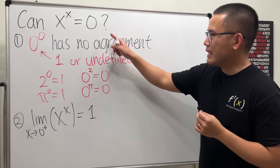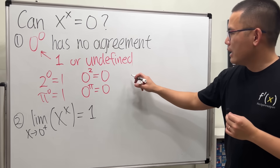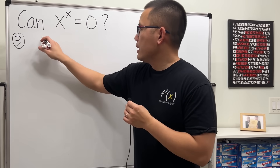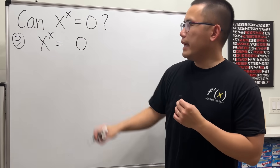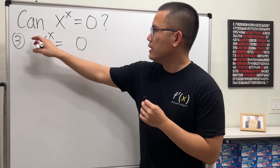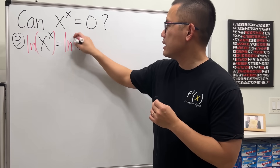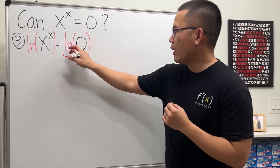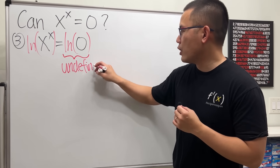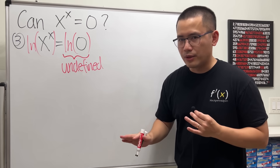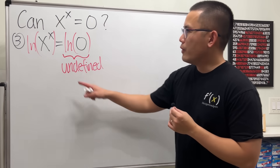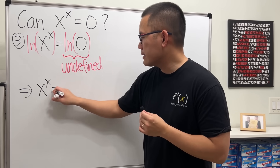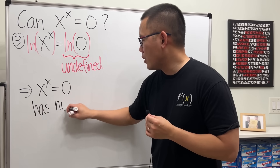It looks like this equation has no solution. Let's try to solve x to the x power equals zero. Because we have x in the exponent, let's take the natural log on both sides. But the moment we do this — ln of zero is undefined, meaning it has no answer. So from here it looks like we can conclude that x to the x equals zero has no solution.